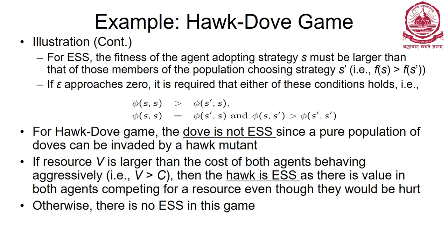As epsilon approaches zero, the ESS conditions become: phi(s, s) > phi(s', s), or if equal, phi(s, s') > phi(s', s'). For the hawk-dove game, the dove is not an evolutionary stable strategy since a pure population of doves can be invaded by a hawk mutant. Whenever a hawk meets a dove, the dove loses all its food. As long as the resource value V is larger than the cost C, the hawk will survive and hawk is the evolutionary stable strategy. If the cost exceeds the resource value, doves may persist.